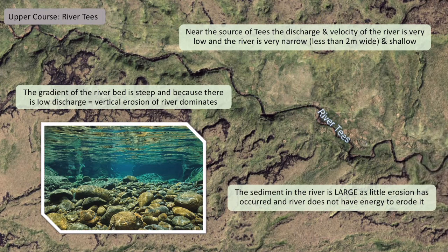In terms of sediment size, the sediment is going to be very large. First, because this is a mountainous area, rocks would have fallen into the river, but more importantly there is very little erosion. The river doesn't have the energy to erode in large quantities, so there are large bits of rock and sediment in the riverbed.